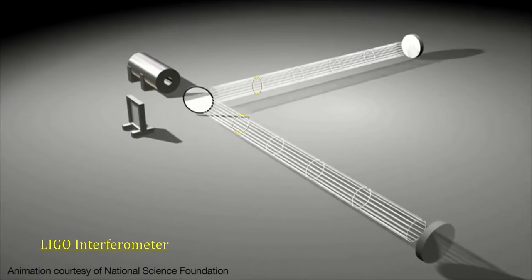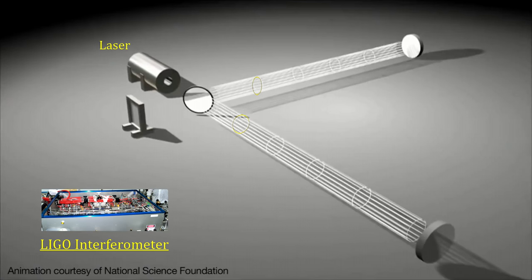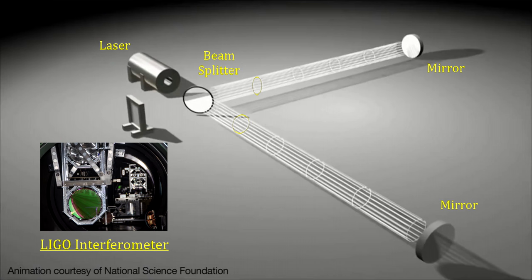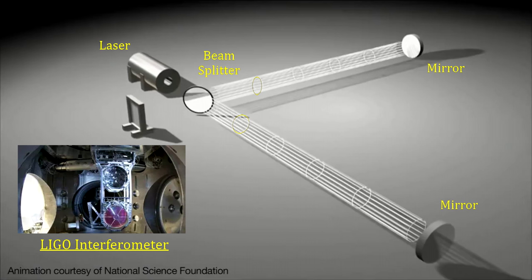Here are the L-shaped LIGO instrument components. It has a powerful near-infrared laser with an output after amplification that reaches 200 watts of 1064 nanometer light. The beam splitter and mirrors that act as test masses are 40-kilogram objects suspended via fused silica glass fibers to minimize noise due to vibrations.